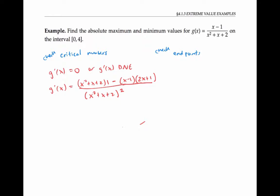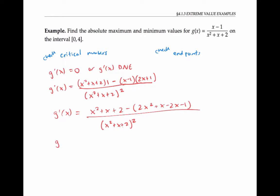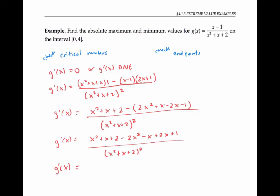Before we figure out where that's zero or doesn't exist, let's simplify it a little bit. We can multiply out the numerator and distribute the negative sign, then add together like terms in the numerator, leaving the denominator alone on all these steps. So our simplified numerator is going to be negative x squared plus two x plus three.